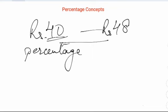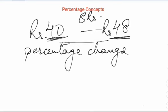If we want to calculate the percentage change, we first have to calculate the amount of change that has happened. From 40 to 48, what change is there? It is 8 rupees. The change is 8. And upon what has it happened? Earlier it was 40. On 40, 8 has been added. 40 plus 8 has become 48.